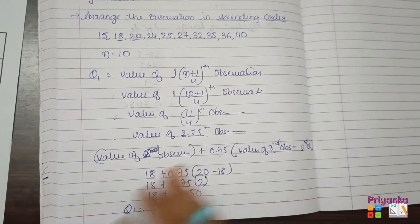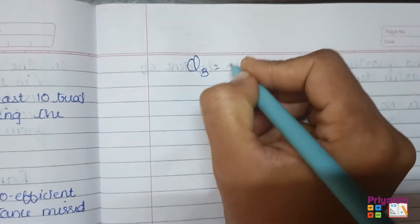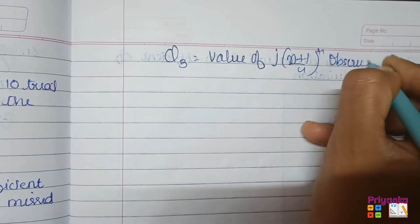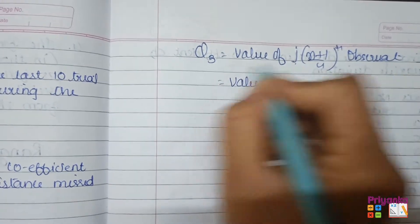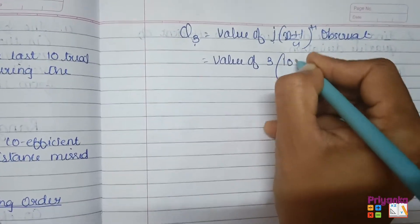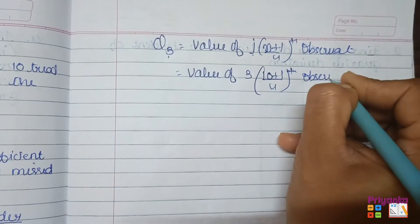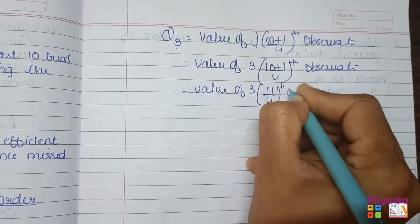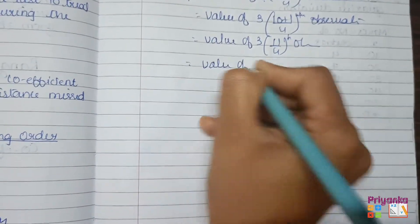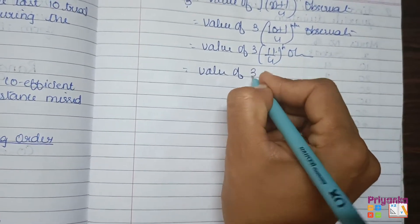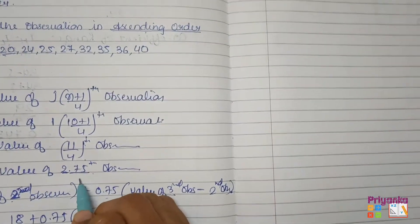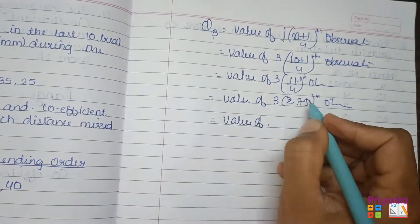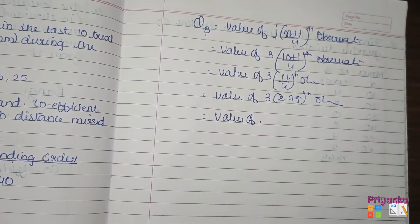In the same way we will find out Q3, that is J(N+1)/4th observation. Here J is 3, so we calculate 3 × (10+1)/4 = 3 × 11/4. The value of 11/4 is 2.75, multiplied by 3 gives us the 8.25th observation.